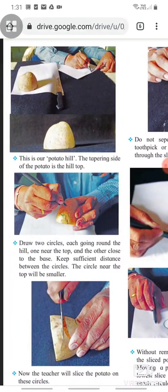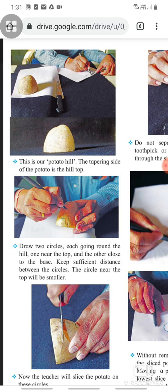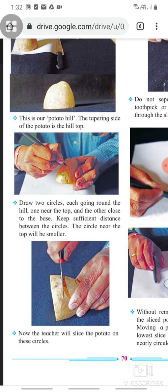This is our potato hill. The tapering side of the potato is the hilltop. Now, draw two circles on each going round the hill, one near the top and the other close to the base. Keep sufficient distance between the circles. The circle near the top will be smaller.